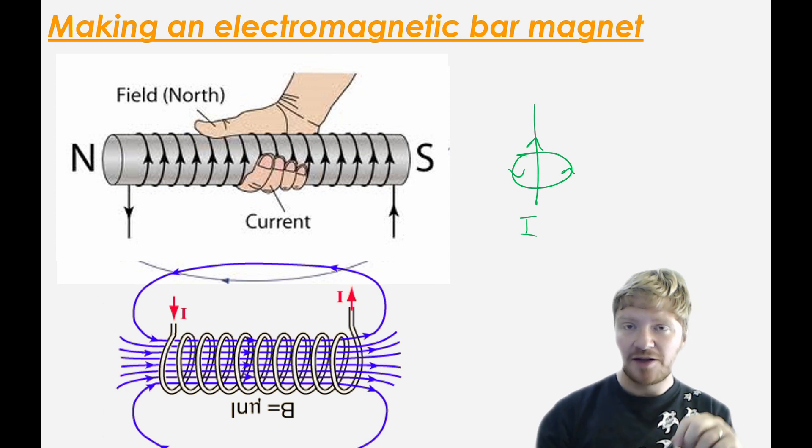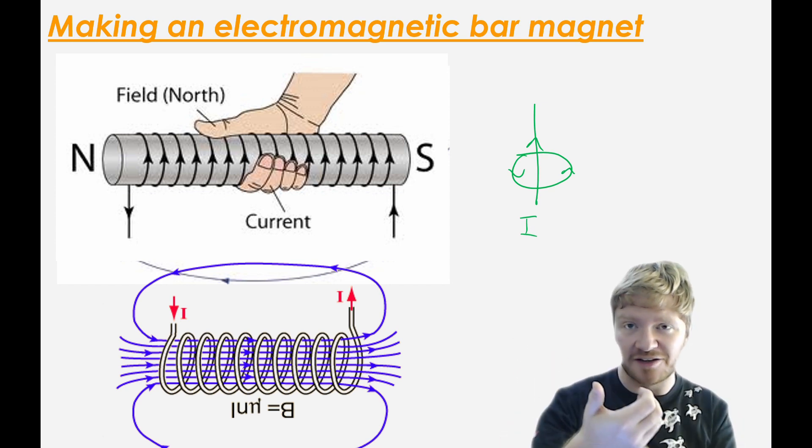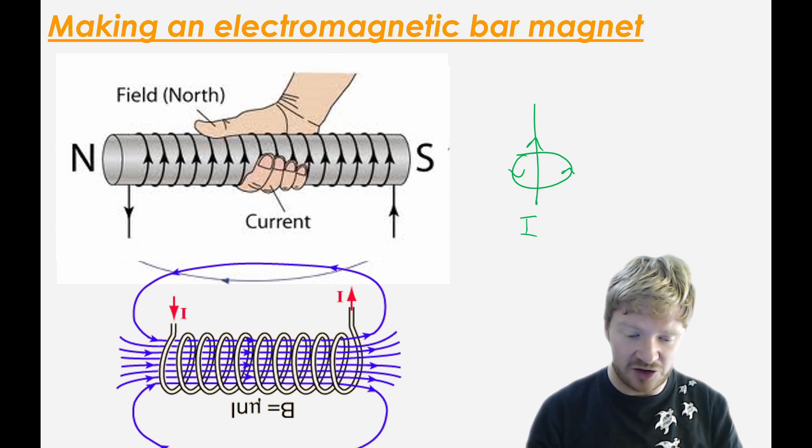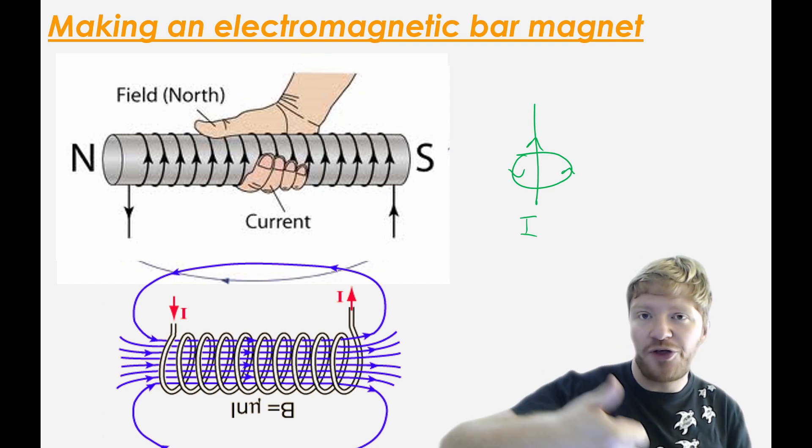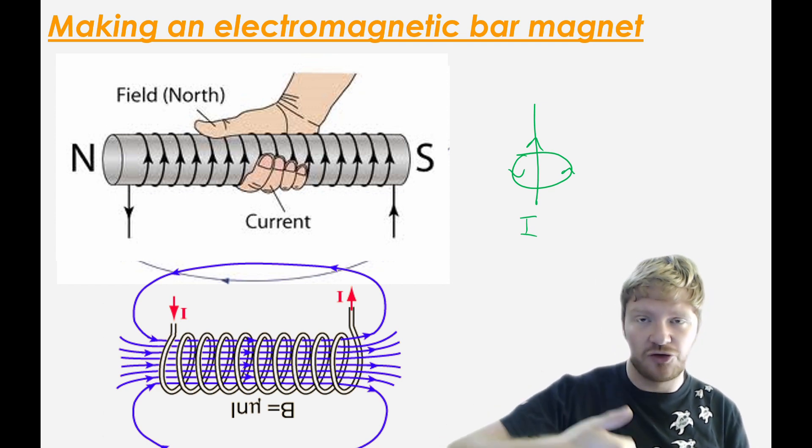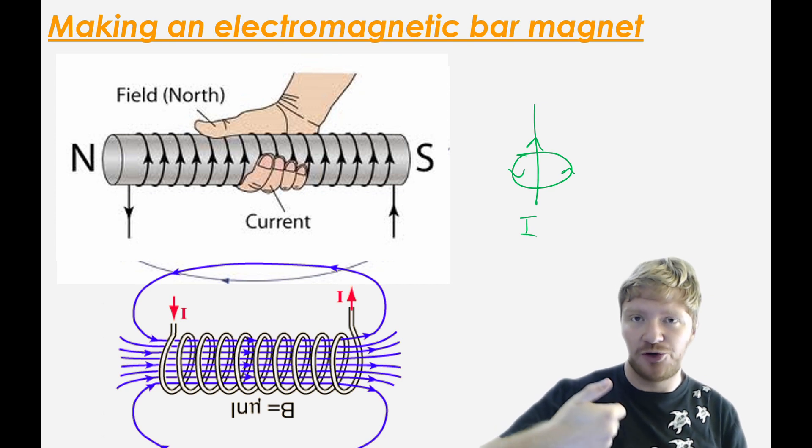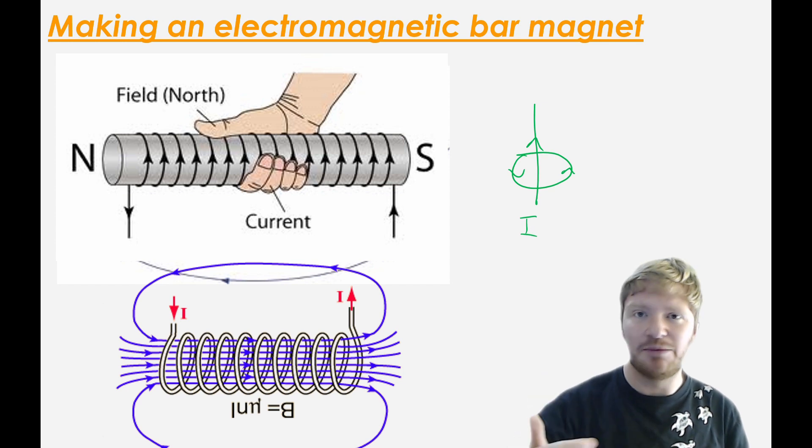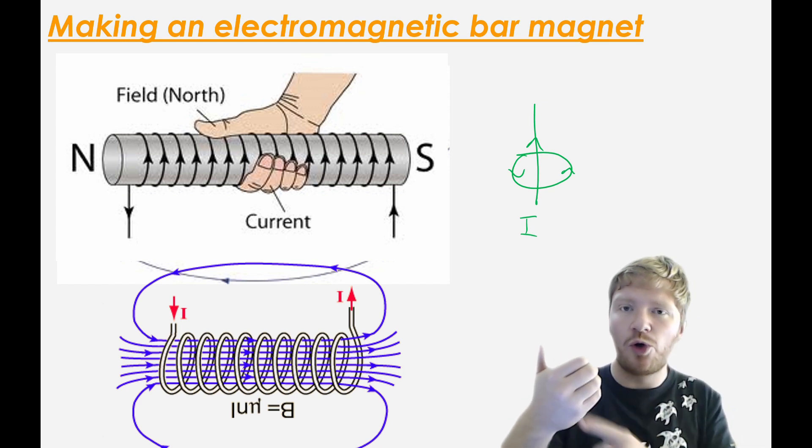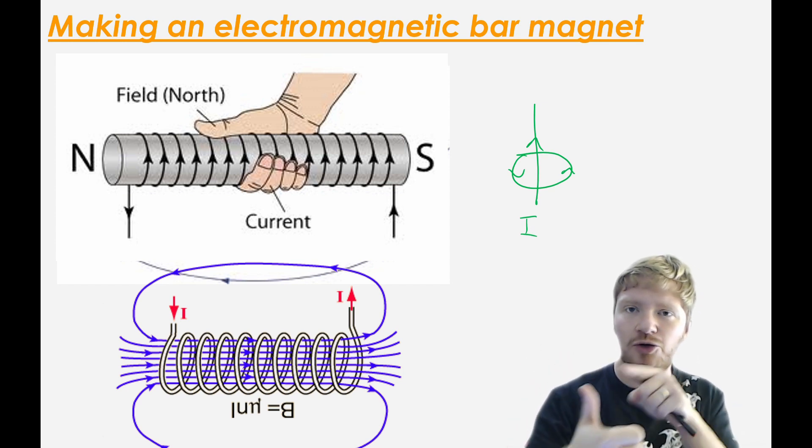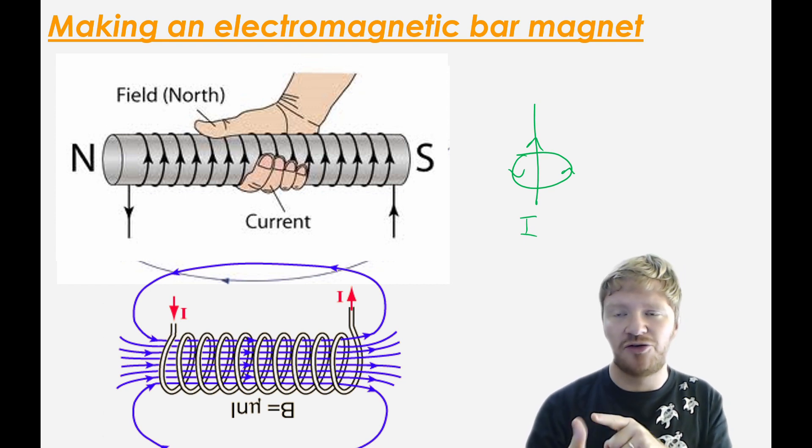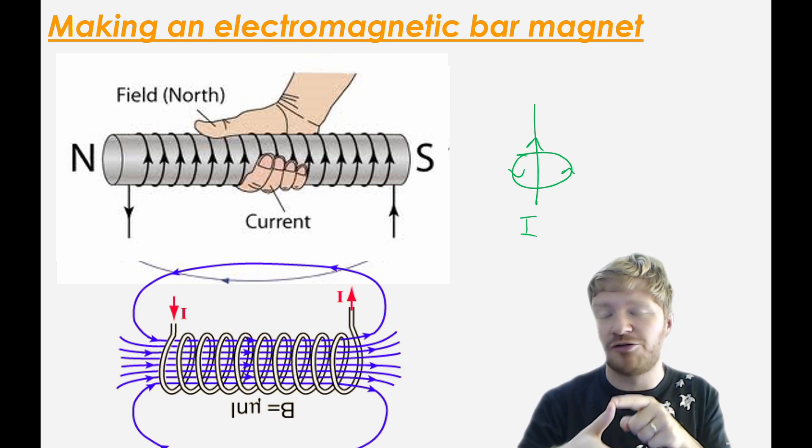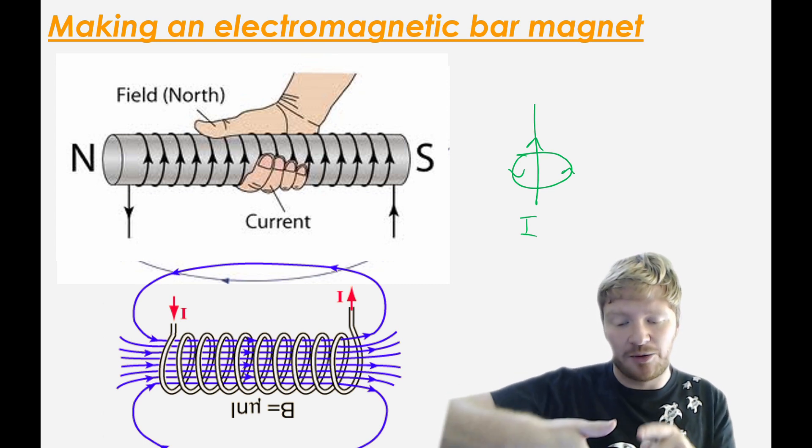The right hand grip rule can also be used on a coil. If you use it on a coil, then what you do is you say that your fingers now are showing the direction of current around the coil like this person is. Then your thumb will show you the direction of the field. So your thumb will point in the north end. It's the same hand and it's the same idea. If you know what's doing the turning, your thumb will point either to north or in the direction of current. If you know the direction of north or the direction of current, then you can use it that way.